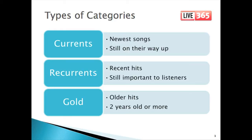The final group is Gold, or oldies. These are the older hits, usually two years old or more, and how far back a station goes depends on the genre. For a top 40 station, few of their gold songs are more than five years old, and almost none would be older than ten. On the other hand, formats like Country, Adult Contemporary, Alternative, etc. may go back as far as 20 or 30 years with their gold. And of course, oldies and classic rock are all gold formats.